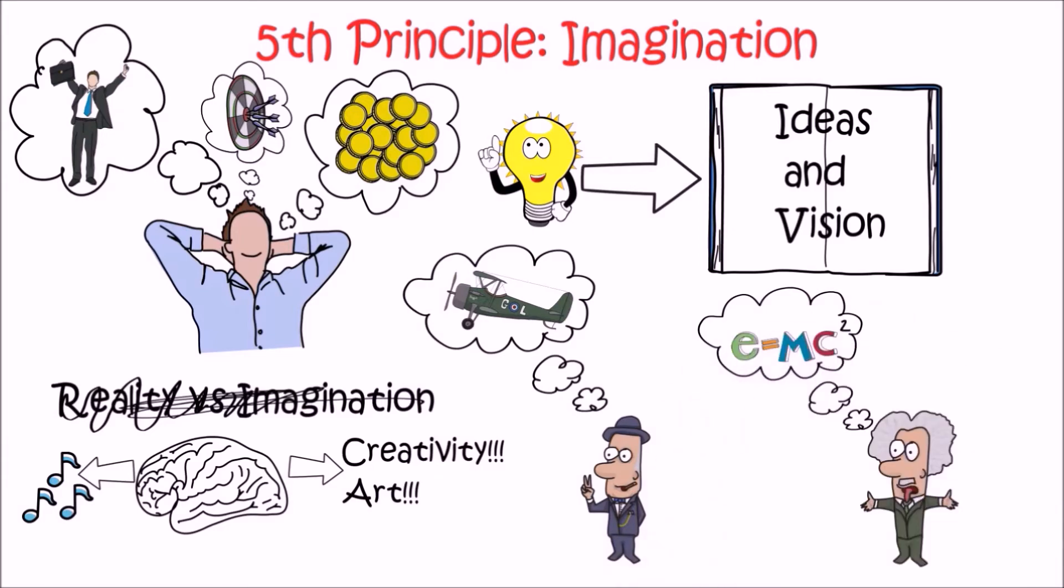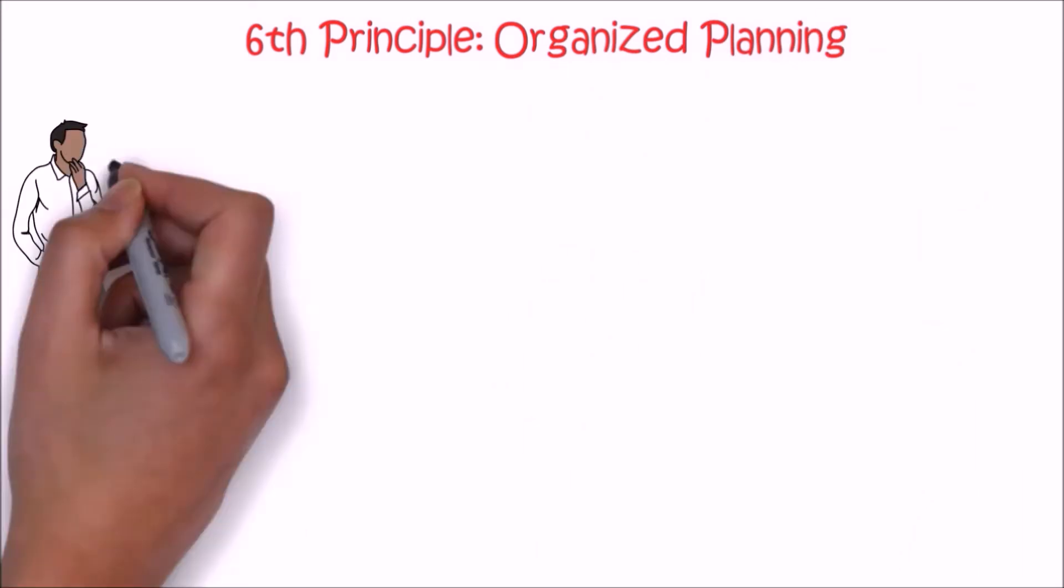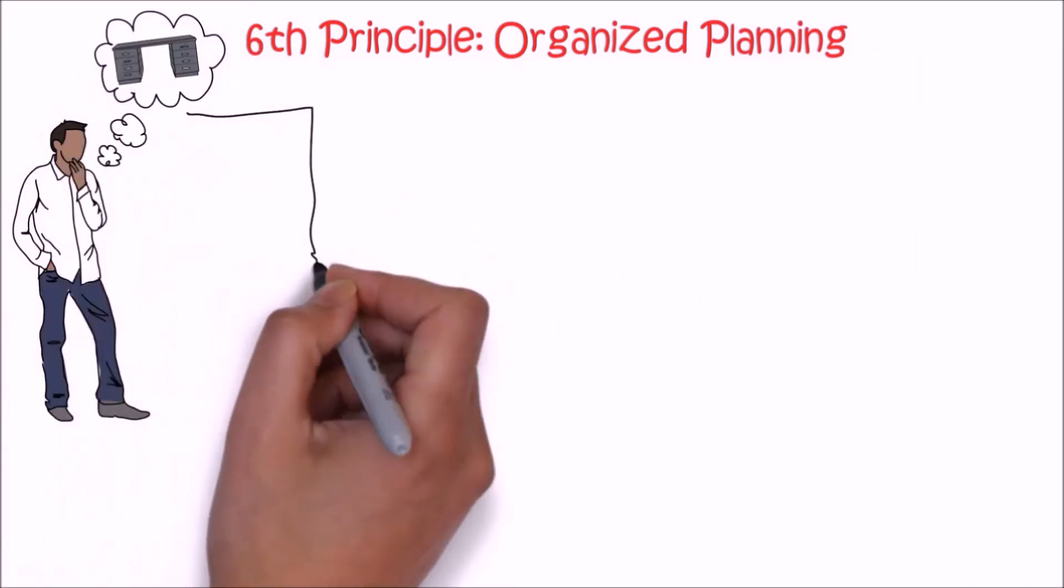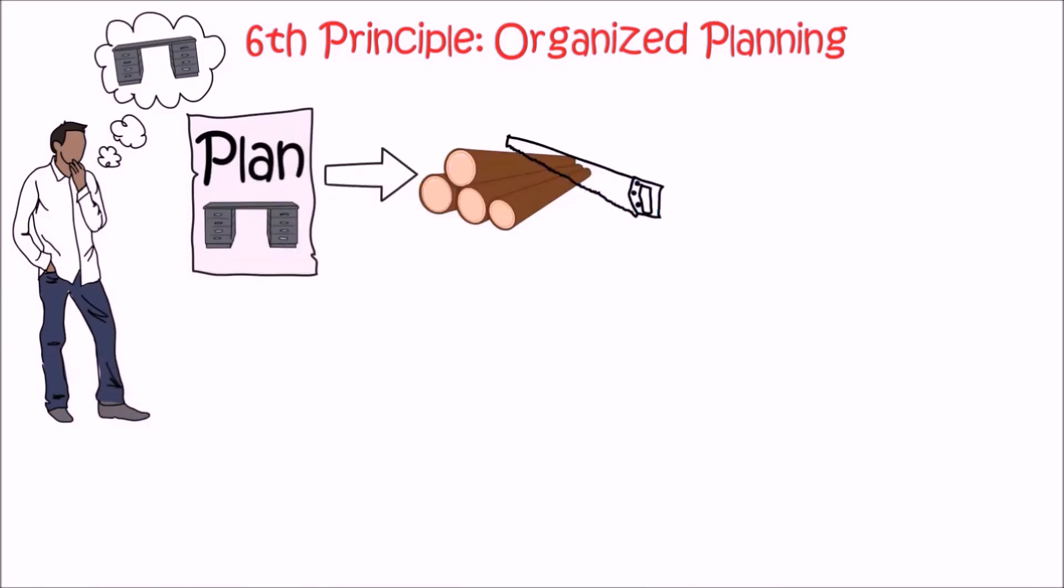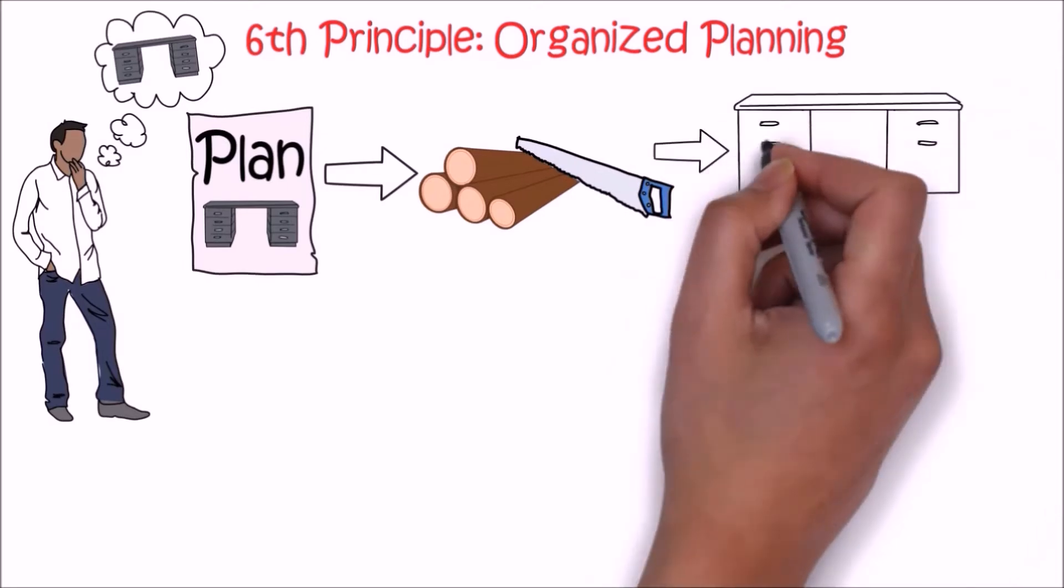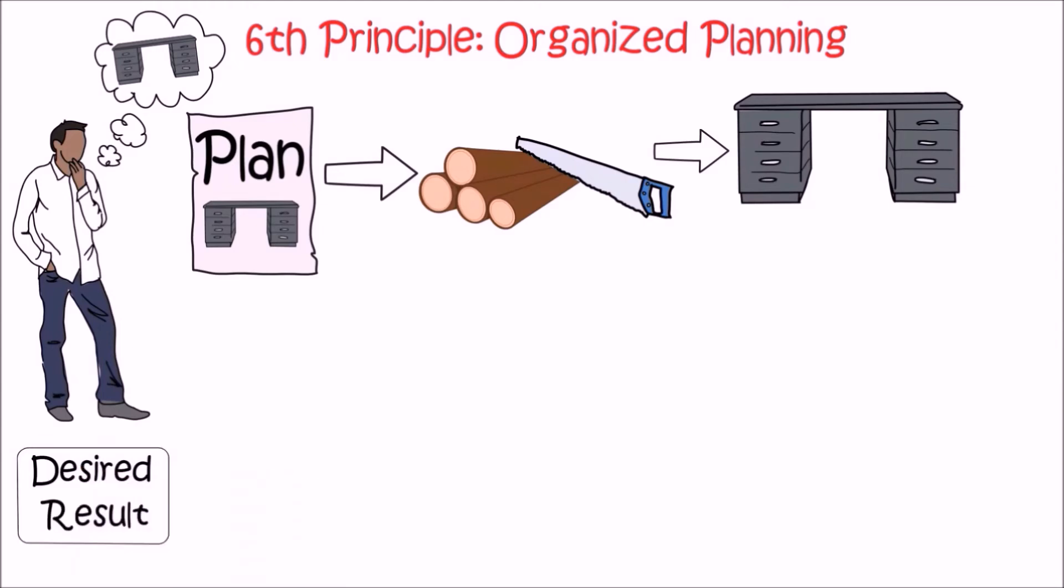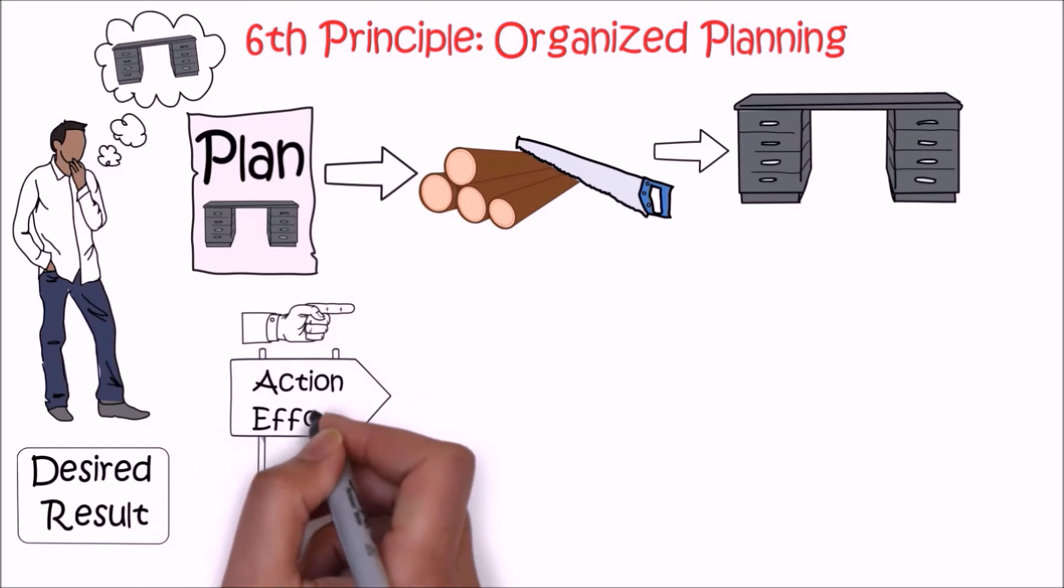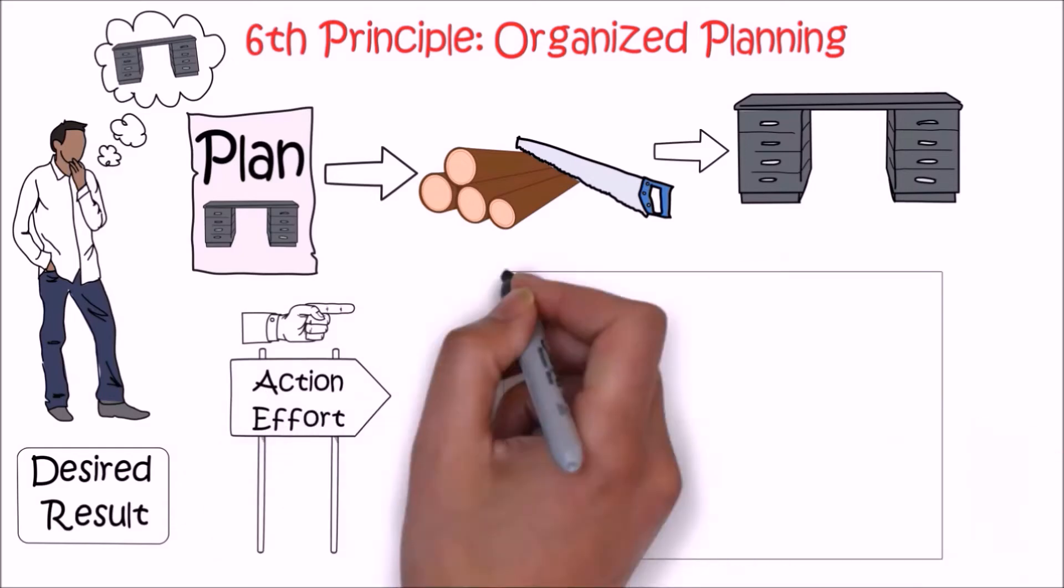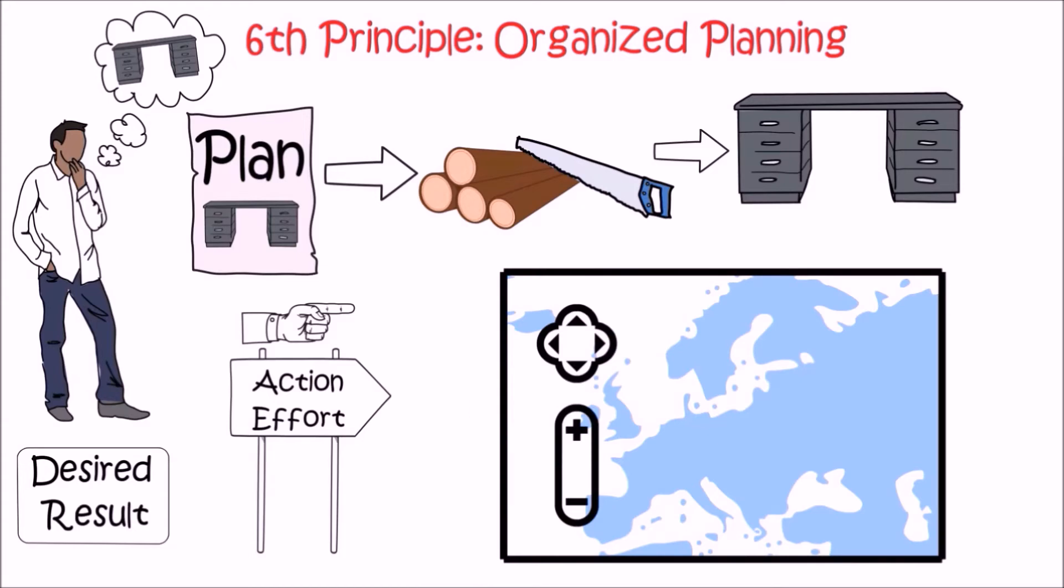The sixth principle is organized planning. So you want to build a nice wonderful table, but first of all you've got to have a plan or design of the table, about how to cut the wood and where to join those pieces. Then only will you be able to create the wonderful table you imagine. An organized plan is required to achieve the desired result. Planning helps to provide direction for your action and effort. Without a plan you will just move here and there but don't get anywhere. A plan is like a map that helps you to get where you want to go.